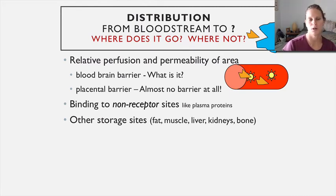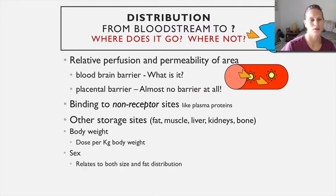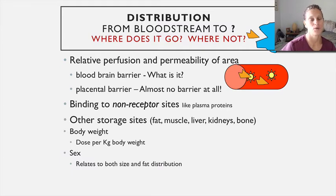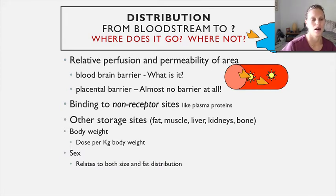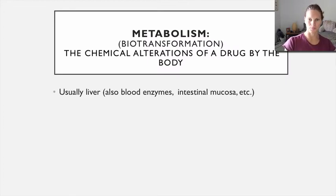Body weight and sex also affect distribution. Dose is often calculated per kilogram of body weight, and people with higher fat content — for example, women compared to men on average — tend to distribute drugs more readily. Now let's talk about metabolism: most drugs are metabolized or biotransformed in the liver, though other sites exist.